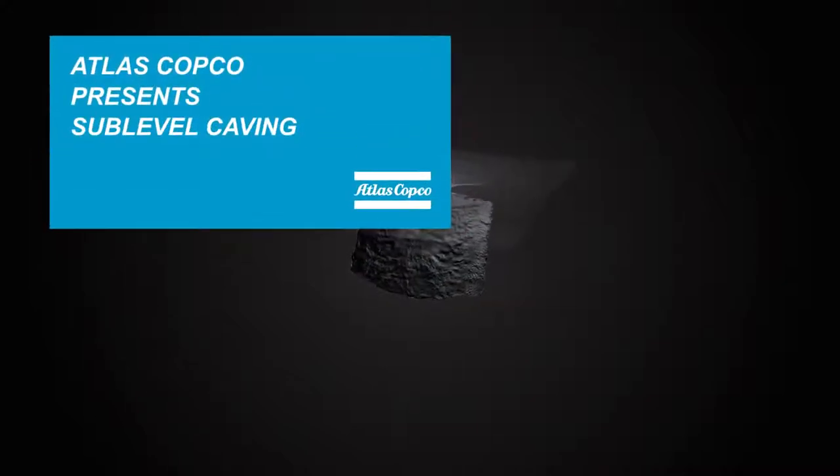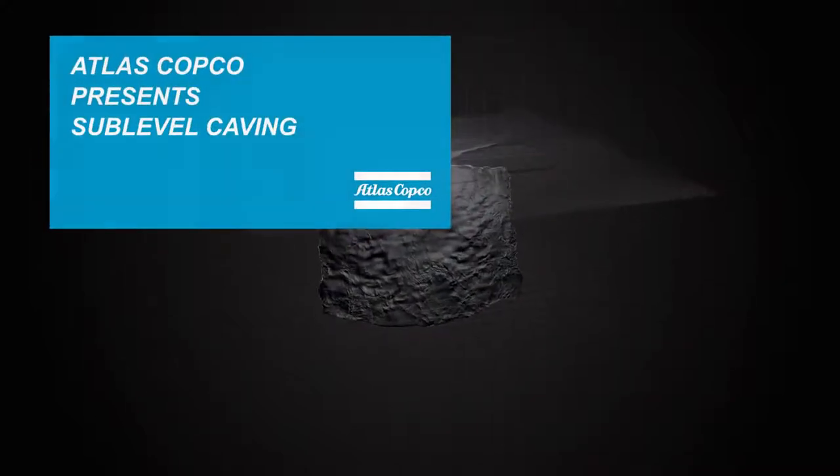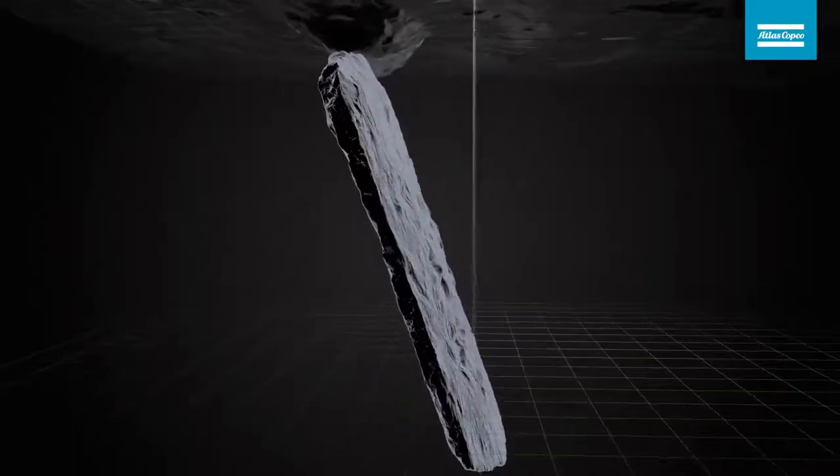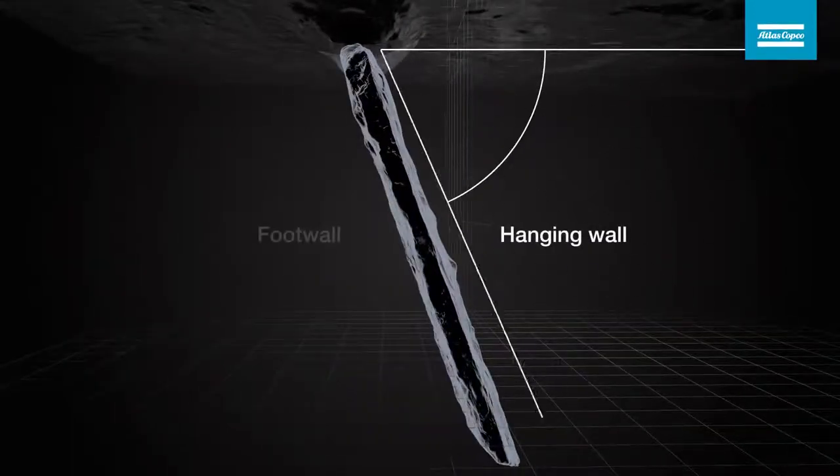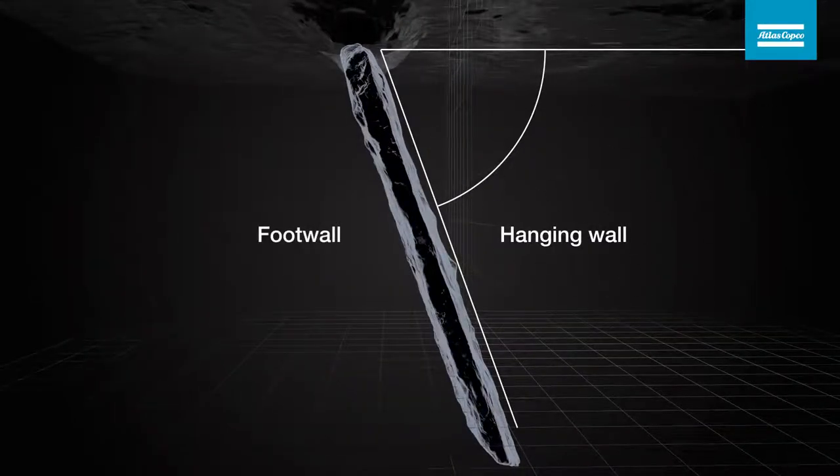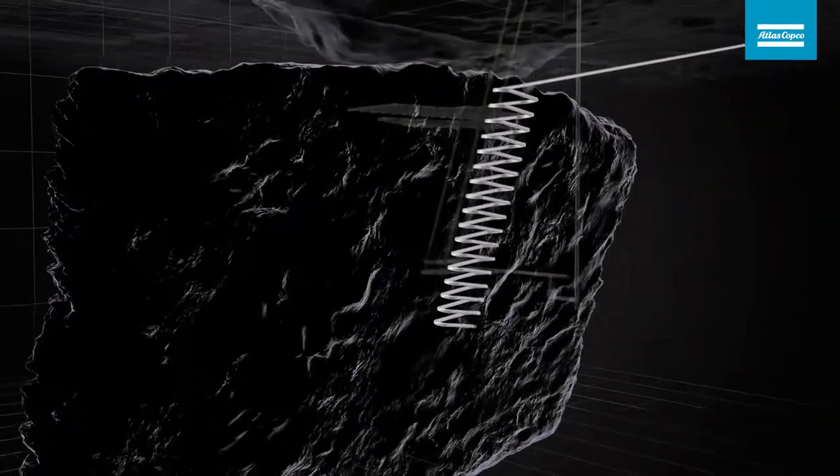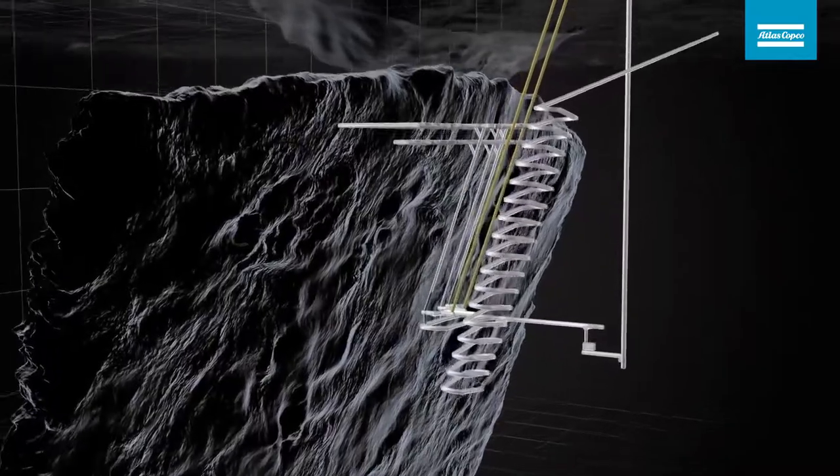Sub-level caving is a large-scale mining method suitable for large ore bodies with a steep dip and a rock mass where the host rock in the hanging wall will fracture under controlled conditions. Therefore, the infrastructure is always placed on the footwall side.